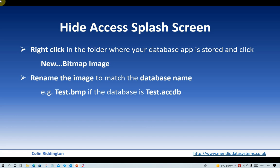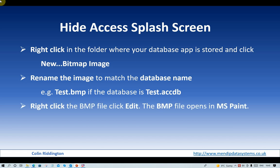You now need to edit the size of that, and you do so by right-clicking on it, clicking Edit, and it opens in Paint — or at least it does by default; it may be something else in your particular case. Click Resize and change it to the smallest size you possibly can: one pixel by one pixel, and you're done. You can reuse that file with any other database — just copy it to another folder, rename it, and it's already waiting for you to use in the same way.